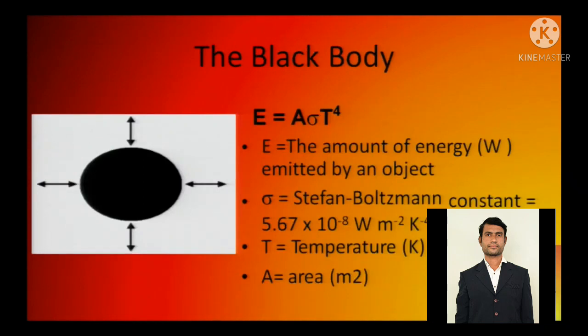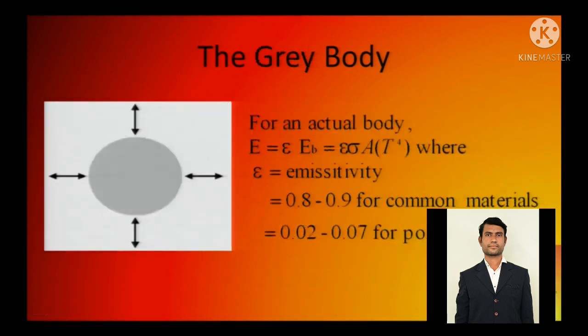The black body. So this is Stefan-Boltzmann's law. This is Stefan constant 5.67×10 to the power minus 8. So it is a very famous law: A sigma T to the power 4. So any object which has got absolute temperature of T can emit radiation with this mathematical calculation.